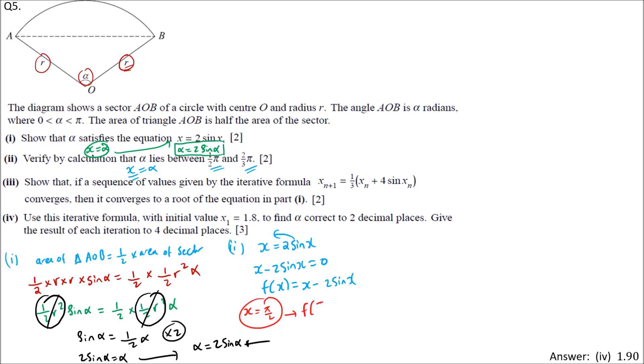We evaluate x equals pi/2. So we have f(pi/2). We calculate pi/2 minus 2 times sin of pi/2. Calculator in radian mode, to 3 significant figures, we get negative 0.429, which is a negative value.